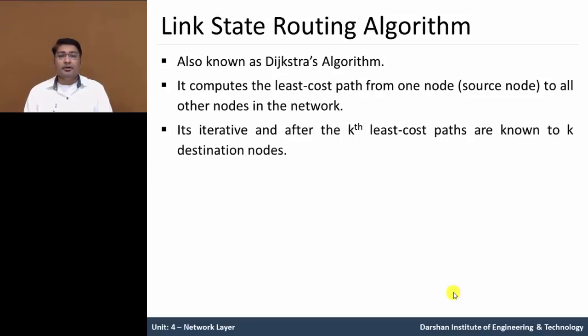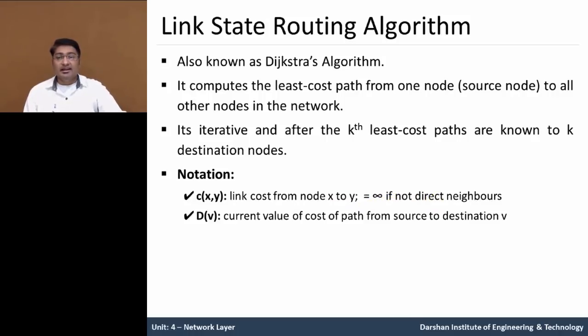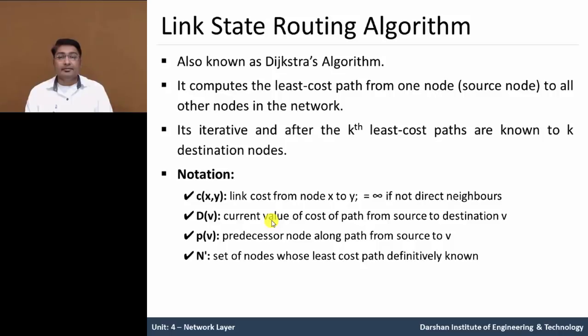It is iterative and after the kth iteration, least cost paths are known to k destination nodes. It uses an iterative procedure for the least cost path from one node to other nodes. So here we need to remember a few notations. The first notation is C(x,y): link cost from node x to y, equals infinity if not direct neighbors. Second is D(v): current value of cost of path from source to destination v. Next is P(v): predecessor node ahead of current node along the path from source to v. Next is N': the set of nodes whose least cost path is known.